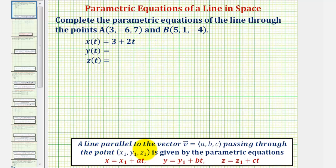A line parallel to a vector V, called a direction vector, passing through the point (x₁, y₁, z₁) is given by the following parametric equations.